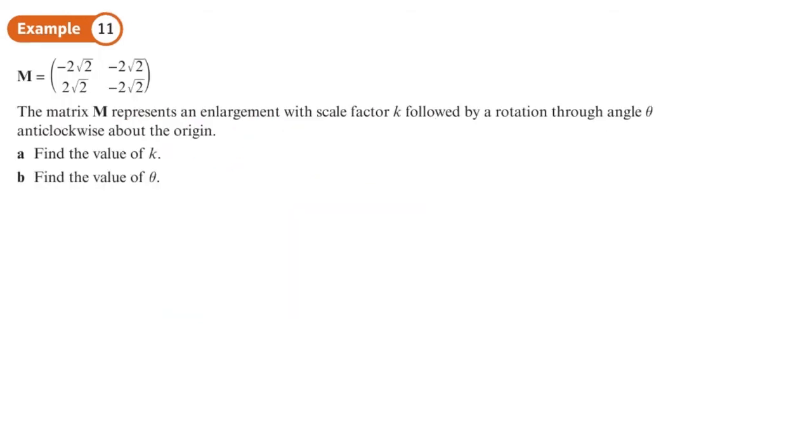Okay, so we've got a matrix here representing enlargement of scale factor k, followed by rotation through angle theta about the origin. Find the value of k. Now, on this one, it's only going to be the enlargement that changes the area. The rotation will not change the area. So we can use the determinant of this matrix. Okay, and that will give us the area scale factor.